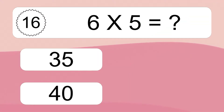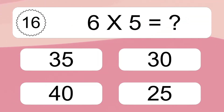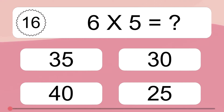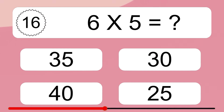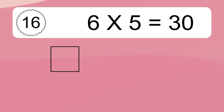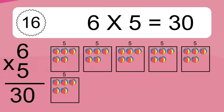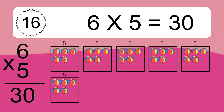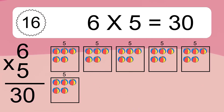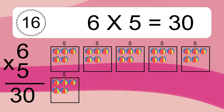6 times 5 equals what? 6 times 5 equals 30. We have 6 boxes and each box has 5 colorful balls inside. If you count all the balls in all the boxes together, you will have 6 times 5 balls. This equals 30 balls.